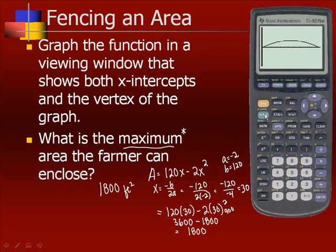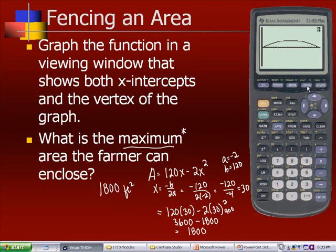Now if we wanted to do that on our calculator, we go second, calculate. Number 4 is the maximum. We're going to go to the left, make sure we are to the left of the highest point. Go to the right, make sure we're to the right of the highest point. Then we hit enter, enter. And we get the maximum occurs when X is 30 and Y is 1800, which is what we got doing the pencil-paper method.